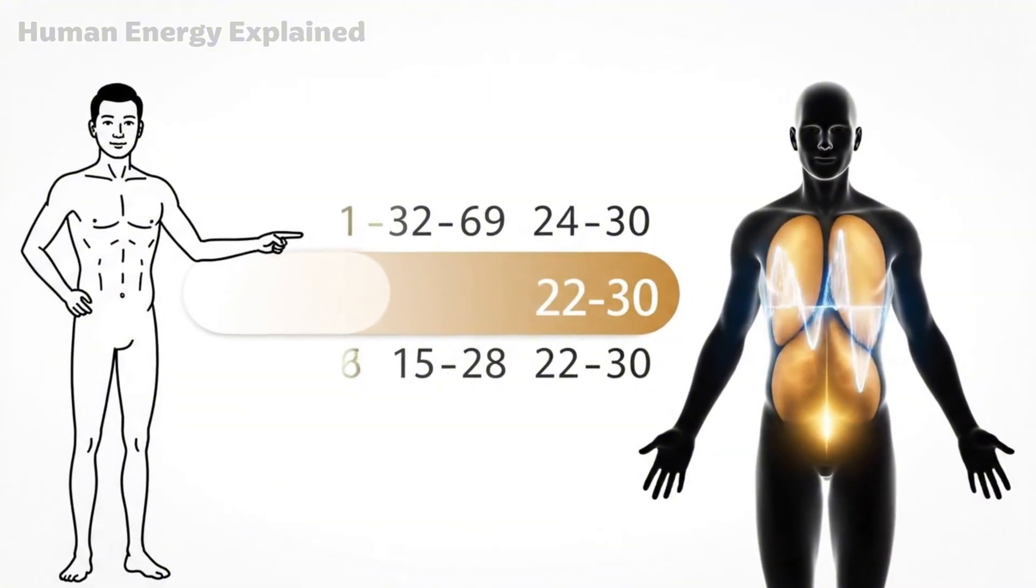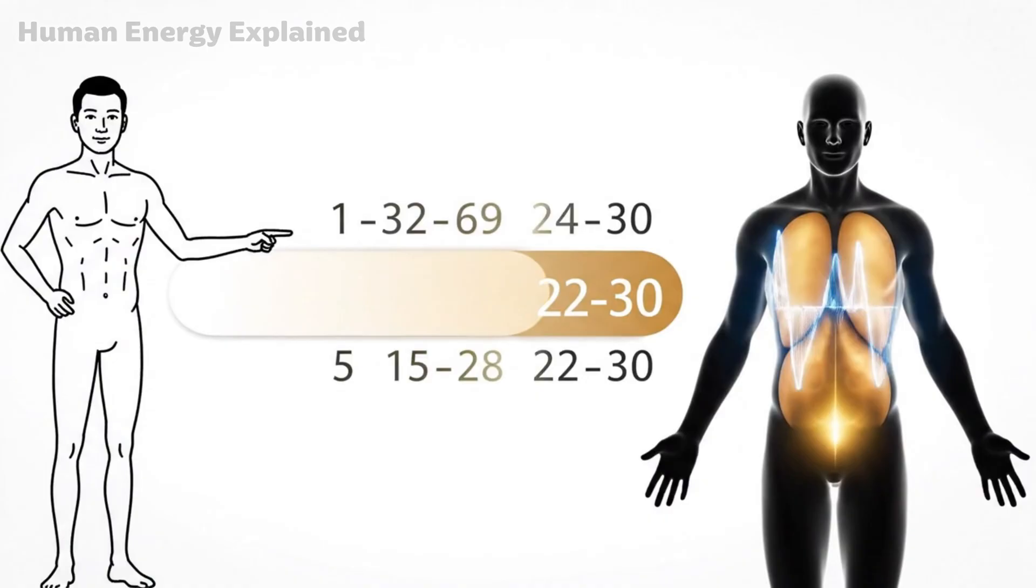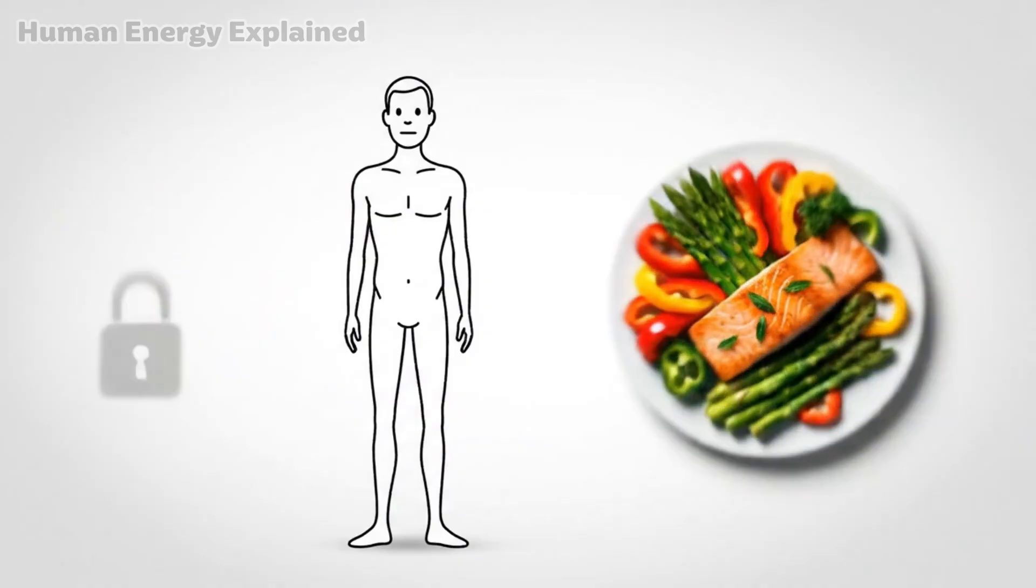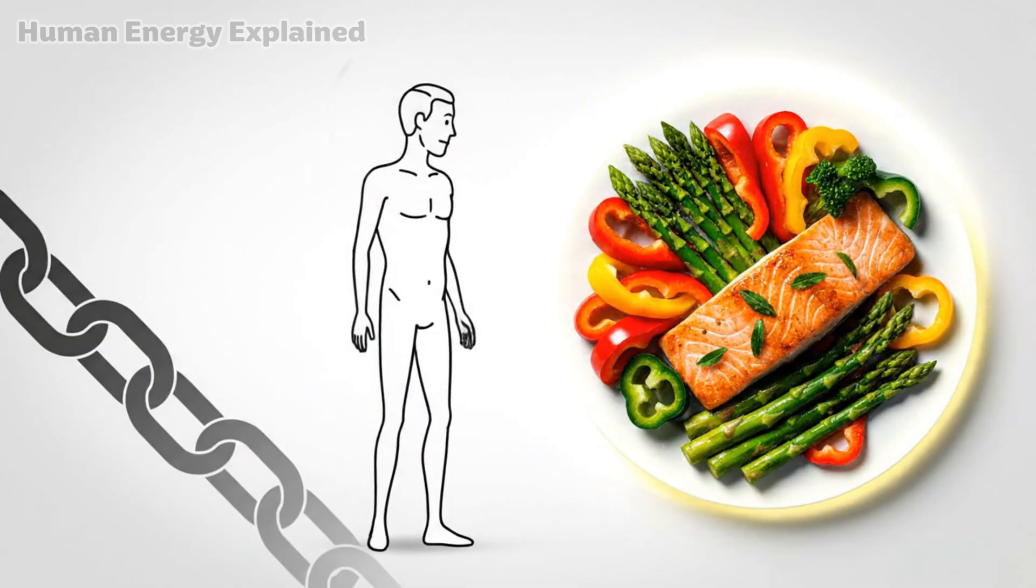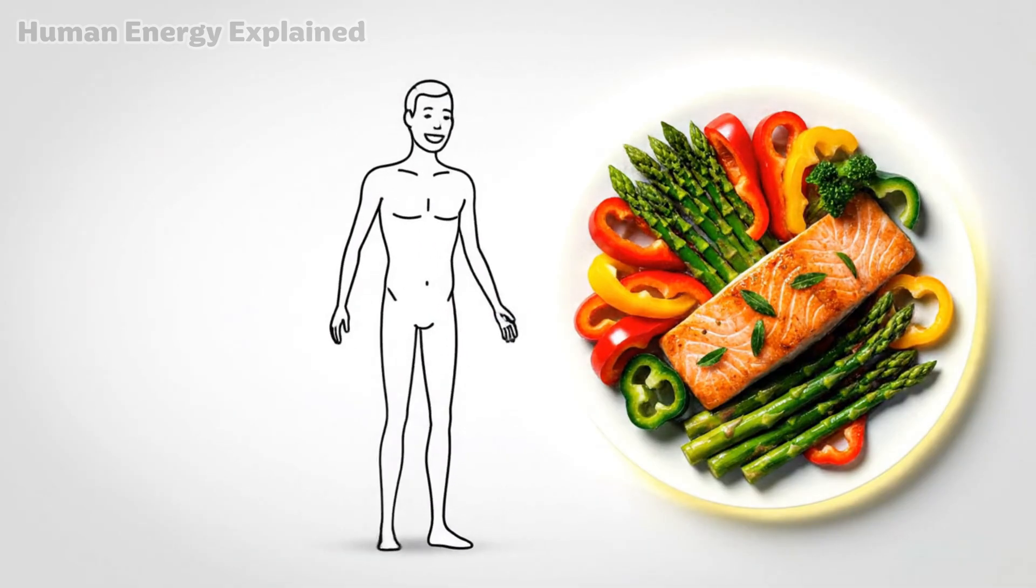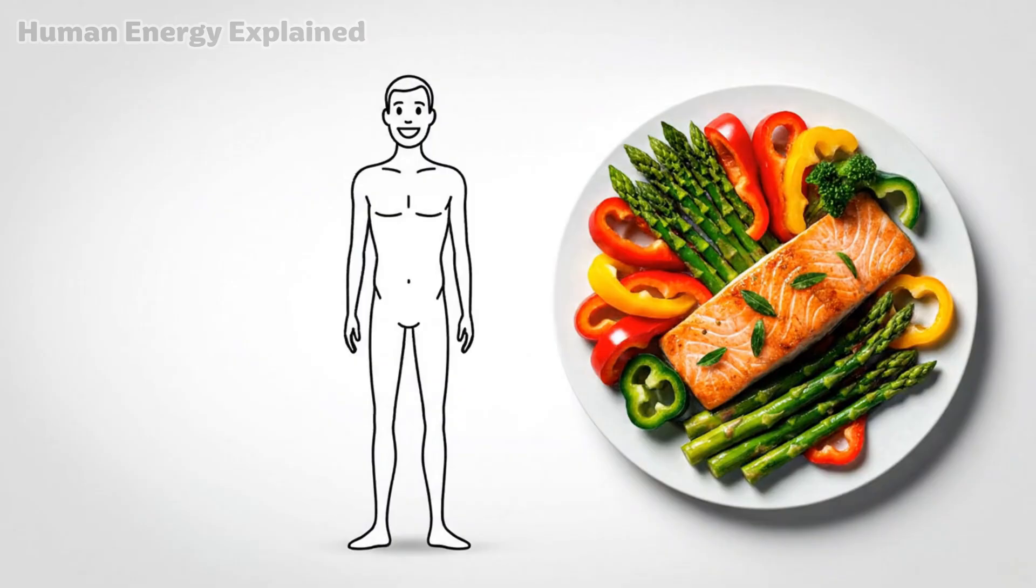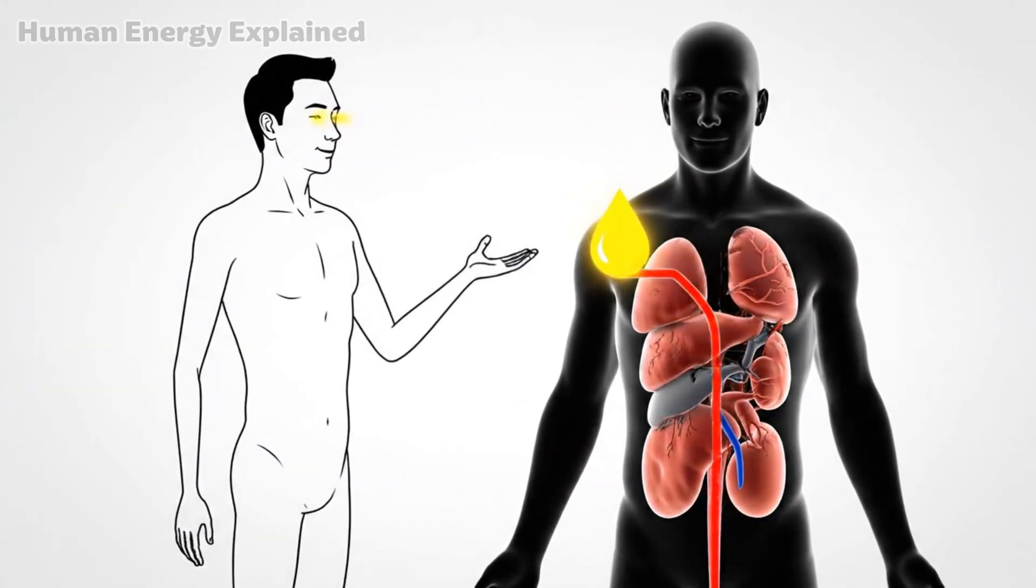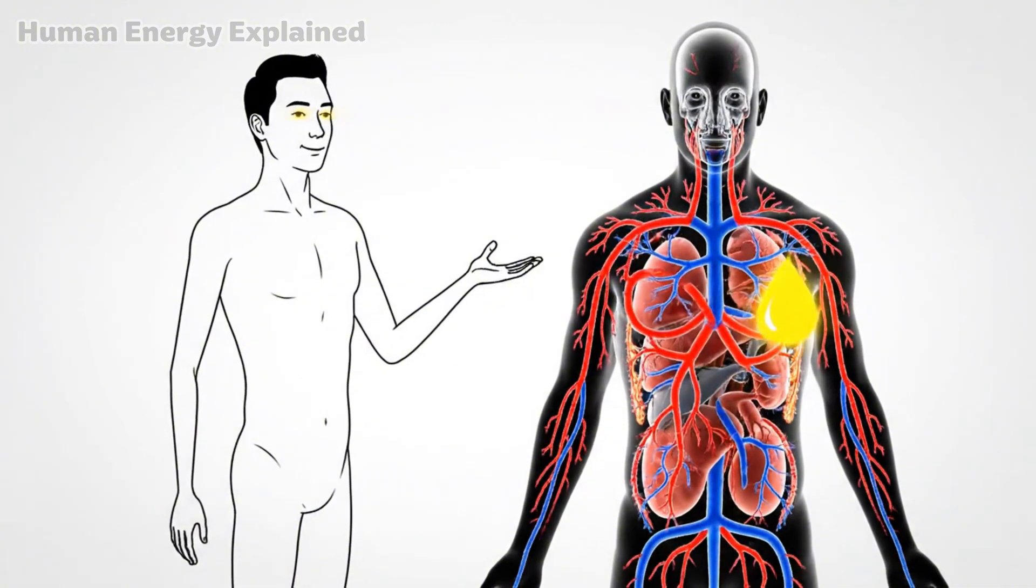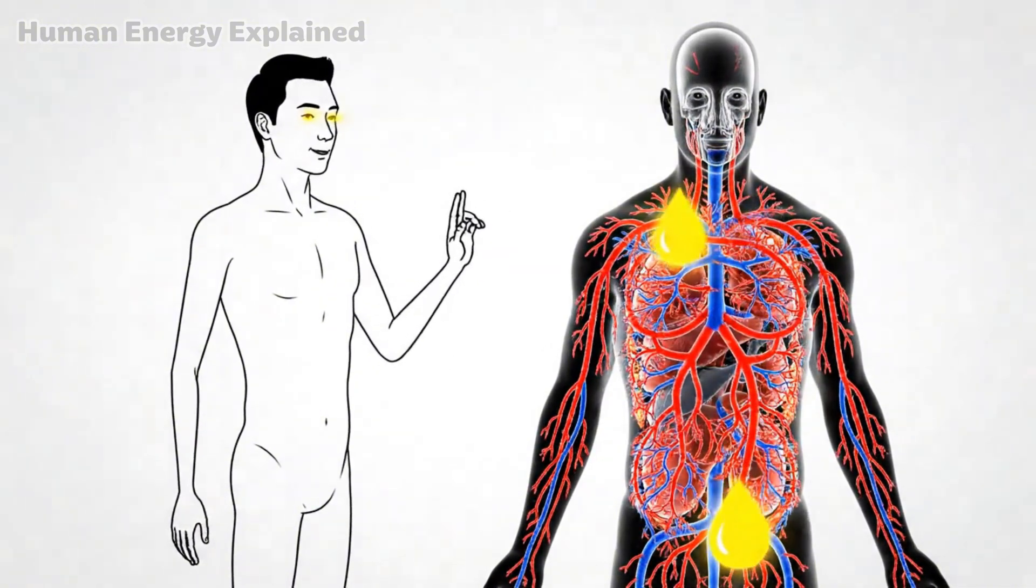Days 22 through 30 represent what I call the mastery phase. By now, eating one meal a day doesn't feel like restriction. It feels like choice. Your body has achieved something called metabolic flexibility. Think of it this way. Before this journey, your body spoke only one language, glucose. It needed constant carbohydrate input to function.